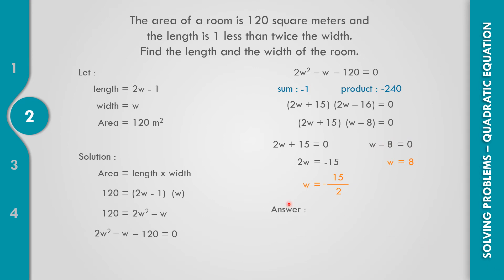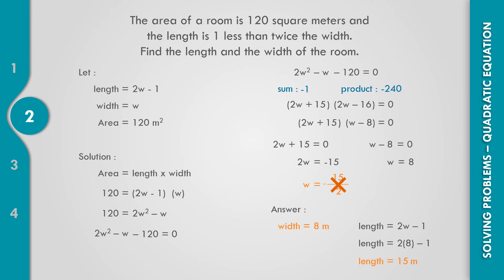Since the width cannot be negative, W equals negative 15 over 2 is incorrect. So W equals 8 — the width is 8 meters. For the length: 2W minus 1 equals 2 times 8 minus 1 equals 16 minus 1 equals 15. The length is 15 meters.